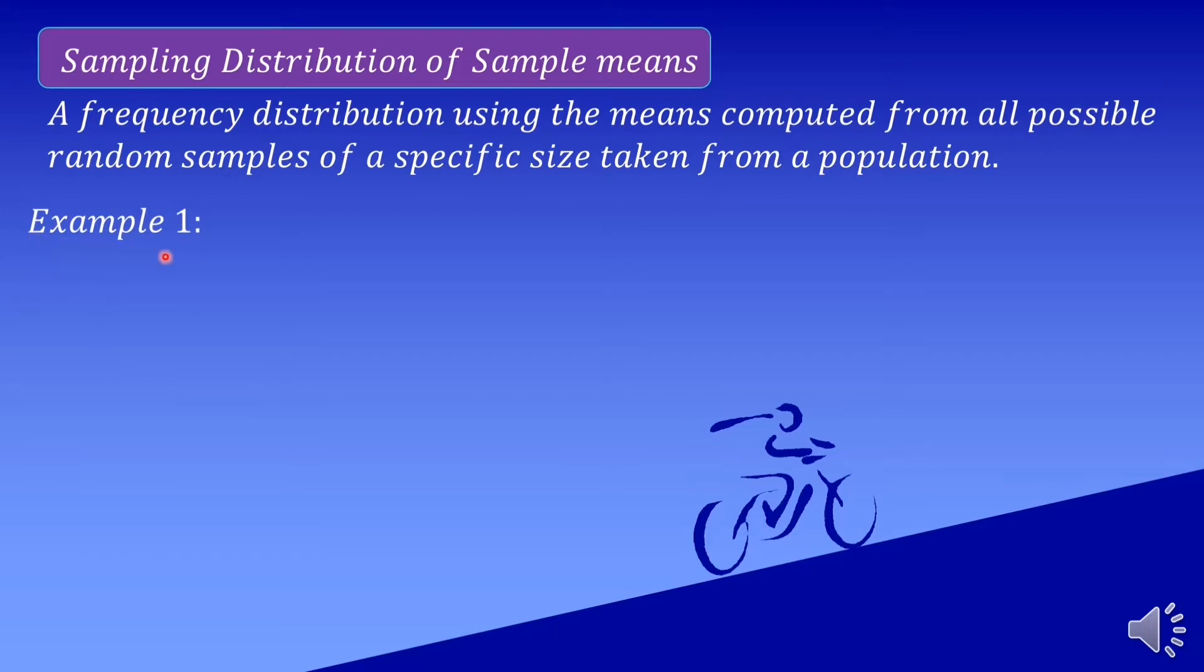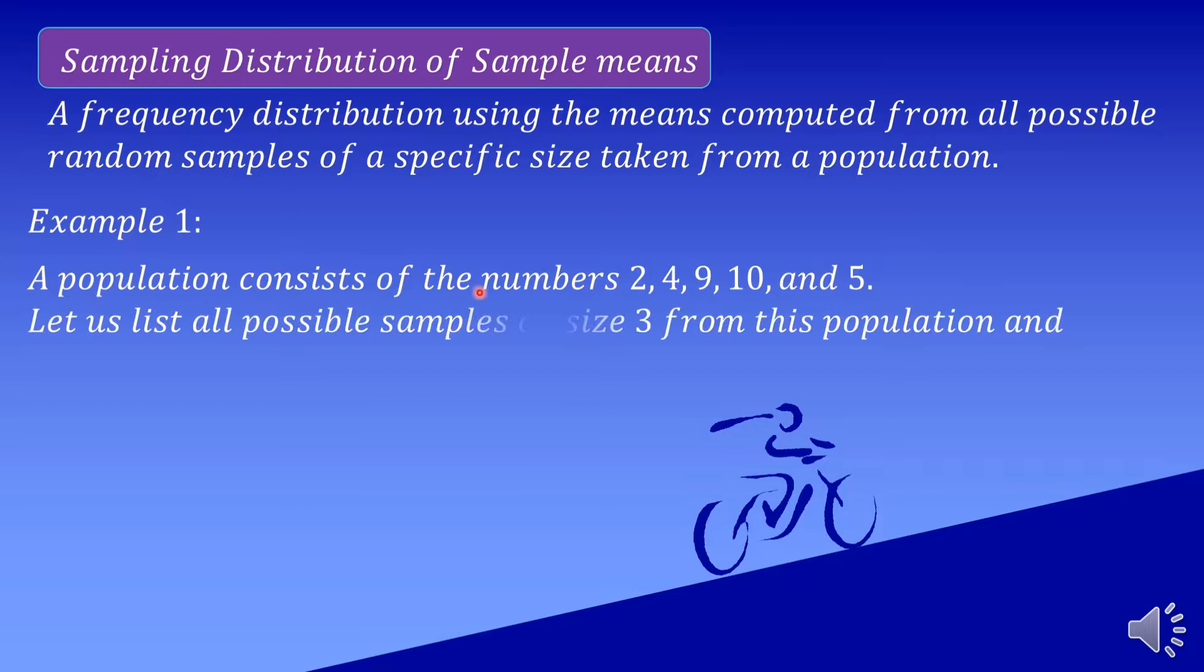So let's have our first example. A population consists of numbers 2, 4, 9, 10, and 5. Let us list all possible samples of size 3 from these populations and compute the mean of each sample.